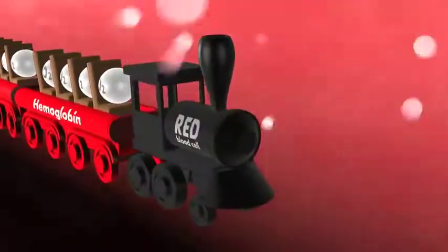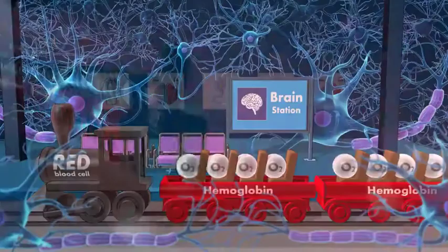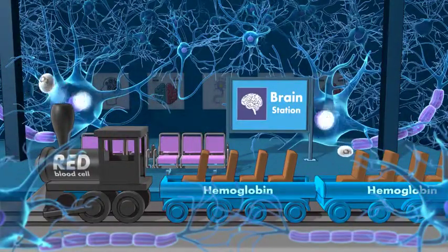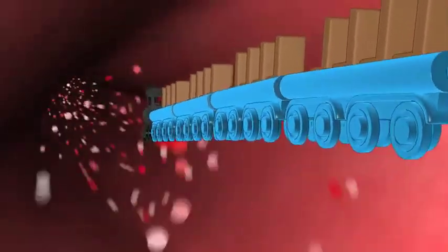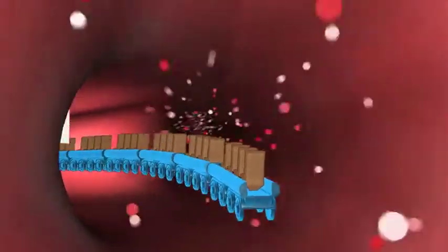Then, the train travels throughout the circulatory system. As it does so, it unloads the oxygen to cells that need it. And these little trains don't run for very long. Red blood cells survive on average for only 120 days.